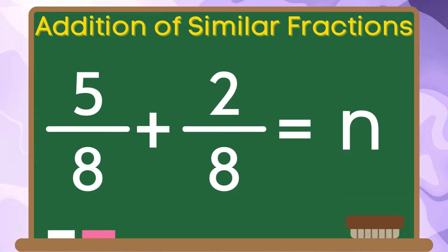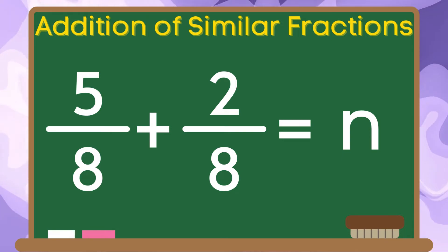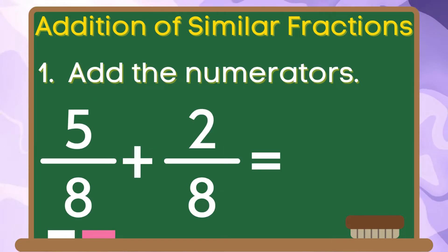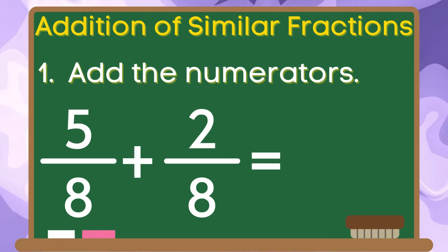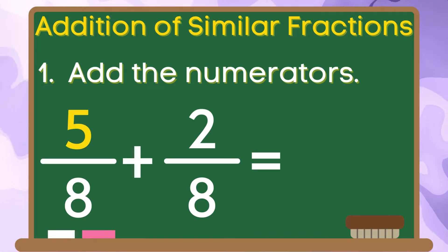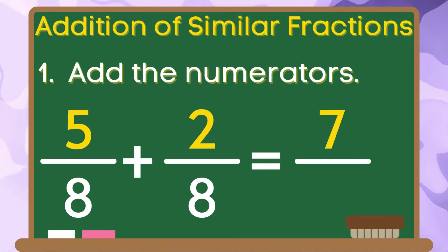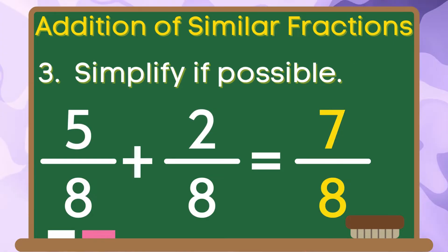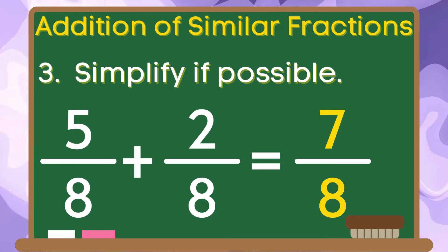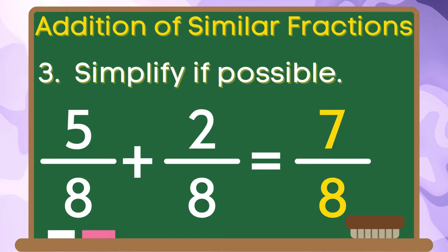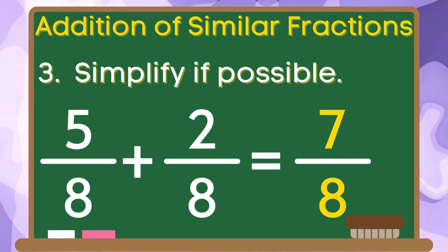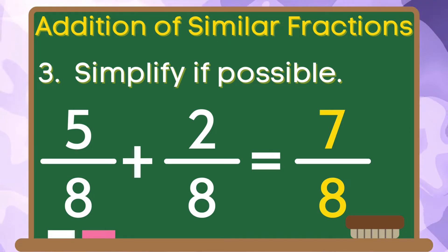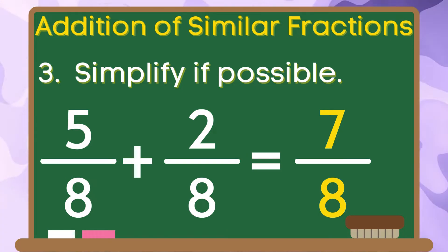Now, let's get the sum of five-eighths and two-eighths. Step one: add the numerators — five plus two is equal to seven. For step two, let us copy the denominator eight. Step three, let us simplify the fraction if possible. Since there are no common factors for seven and eight, the simplified sum is seven-eighths.